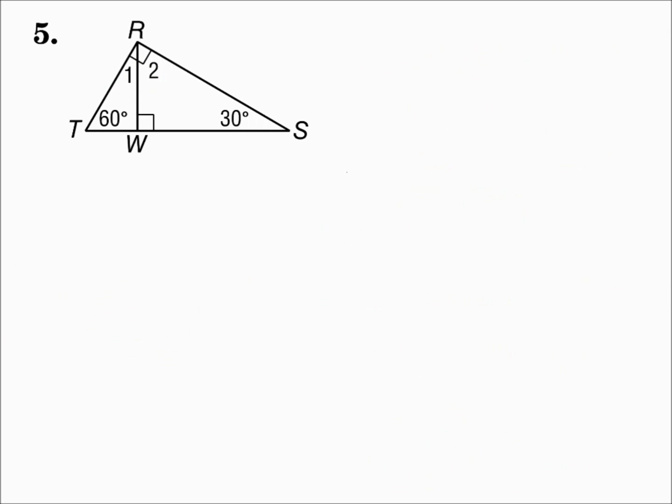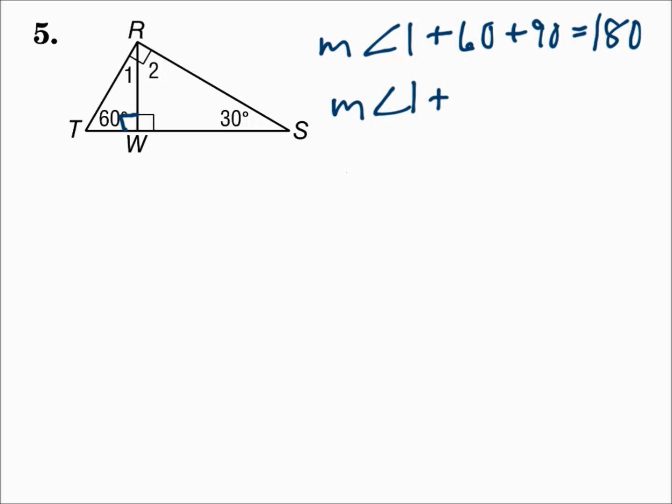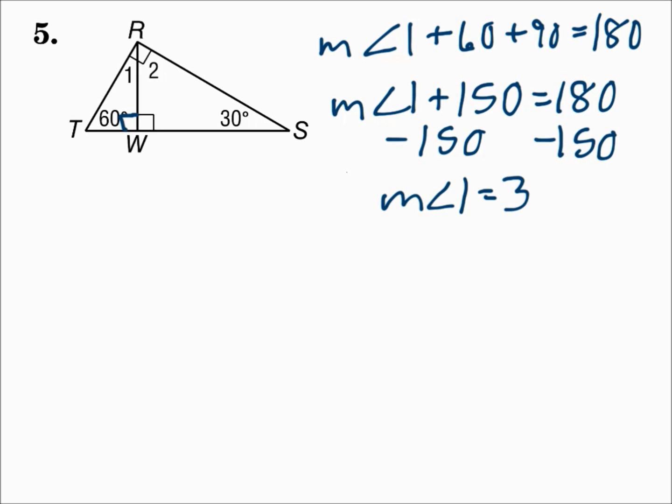Number five — here we have two triangles next to one another. Look at angle RWS: it's a right angle. Because of the linear pair at the bottom, angle RWT is also a right angle, since 90 + 90 = 180. To find angle one: angle one + 60 + 90 = 180. 60 + 90 = 150, so the measure of angle one is 30.